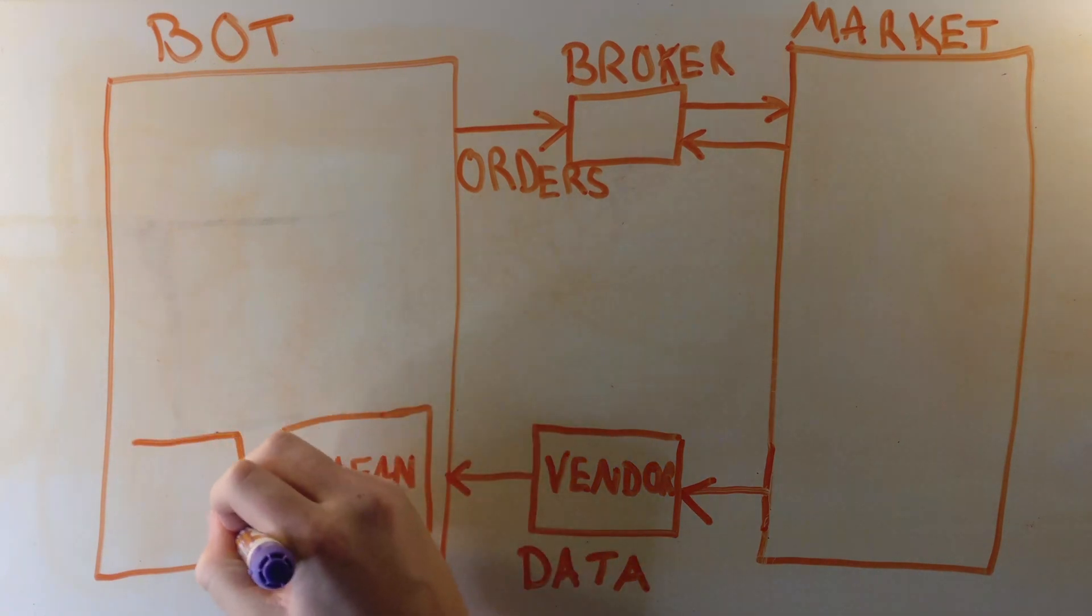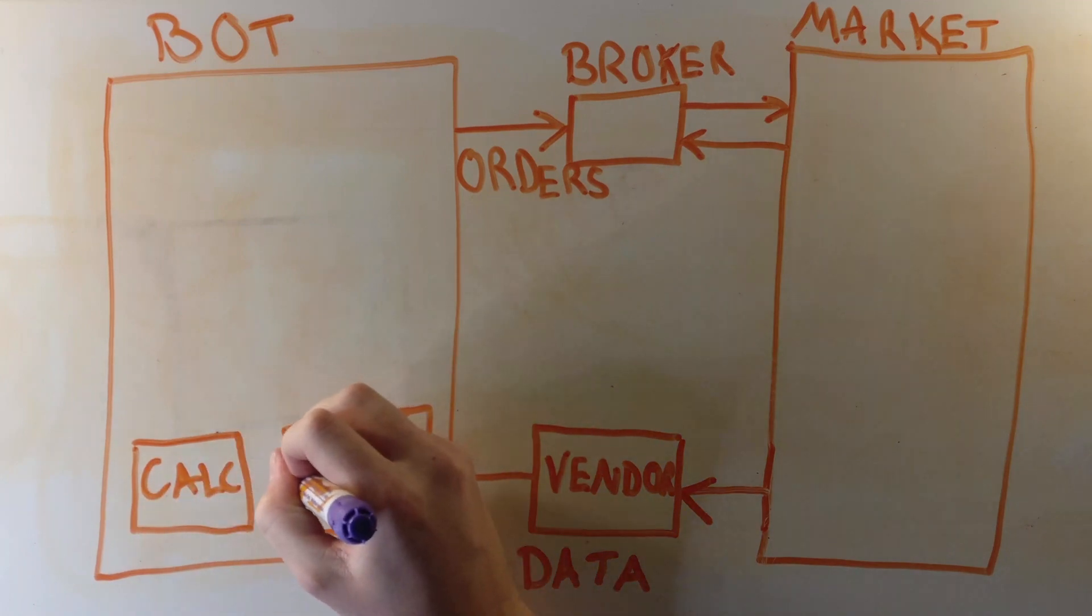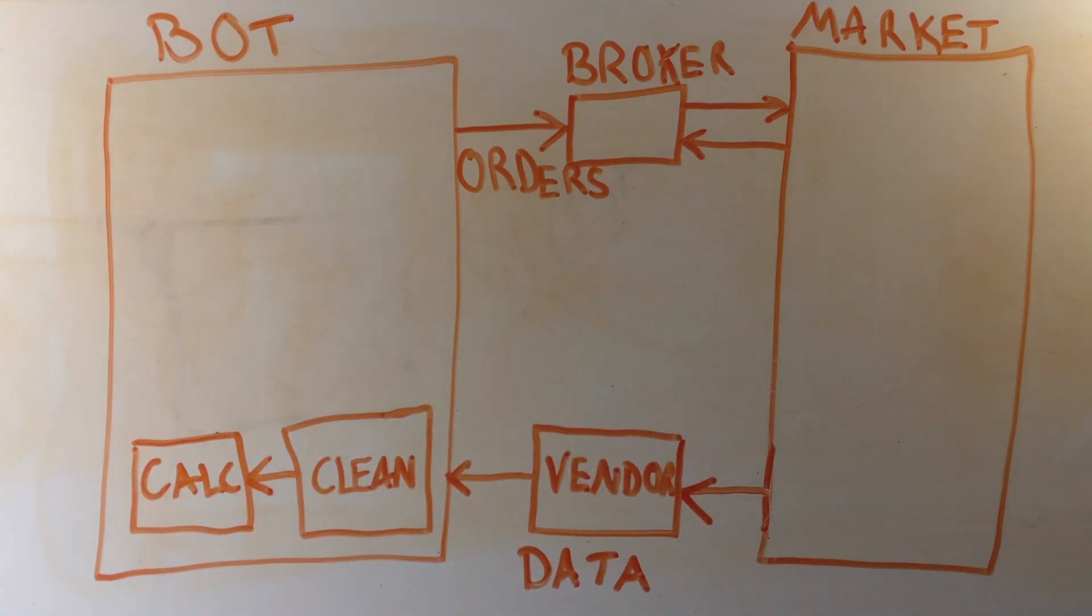Now we move on to calculations with the data. This will add any advanced metrics that our algorithm requires that may be composed of the underlying data. This could be metrics like exponential moving averages, volatility, or some other metrics scaled to something like market cap. This now gives us a data set that the algorithm will process.